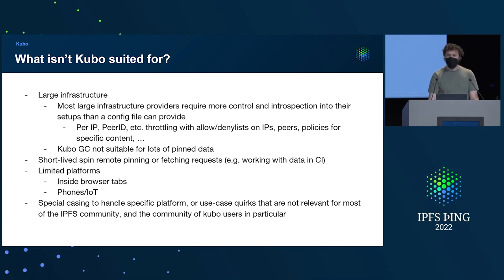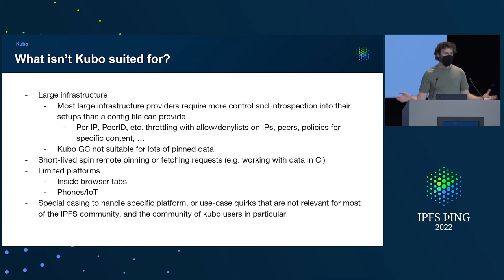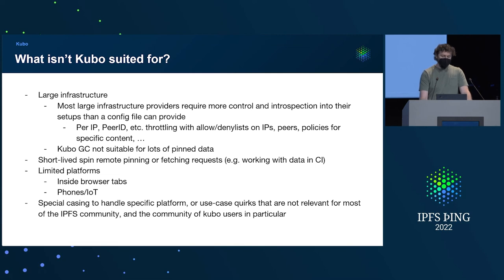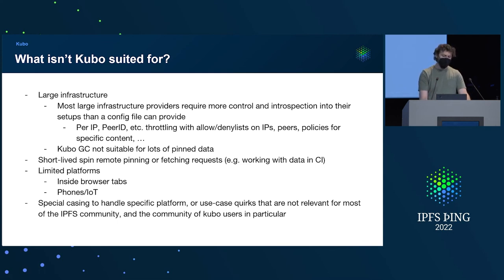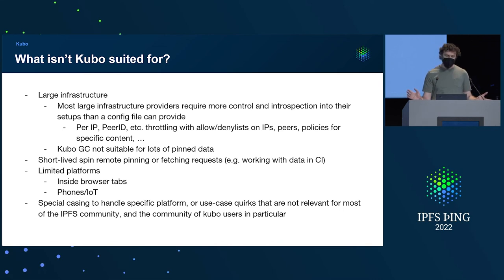Some things Kubo isn't suited for: large infrastructure tends to require a lot of control for nodes that are also running on desktop machines, and creating a config file that isn't impossible to manage is very difficult — large infrastructure providers tend to need more control. Short-lived spin-up use cases — where you just send or fetch data — are also not well suited, because of the whole running-a-daemon-that-controls-all-resources architecture. Other platforms with limited access, whether phones or browser tabs, are also not a good fit. And because of Kubo's historical use by so many people, there are niche use cases where a specific platform or application really could use a particular optimization that can't work in Kubo because of the broad set of people that have to be supported.